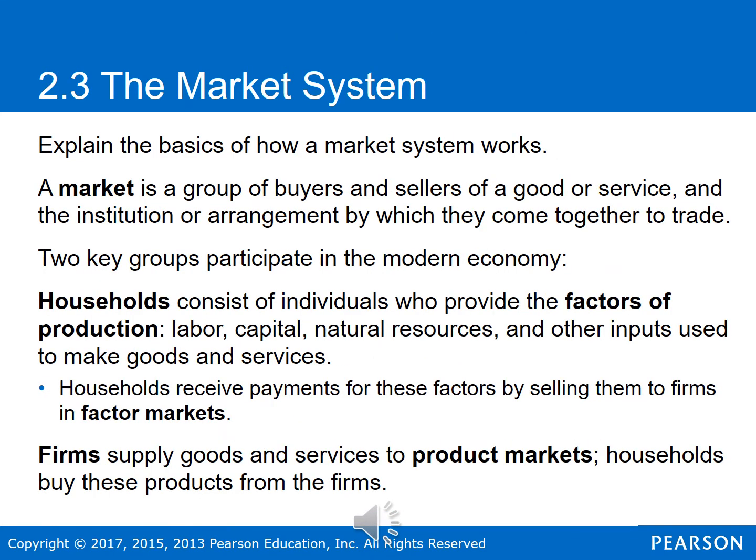Now let's turn to the market system. A market is a group of buyers and sellers of a good or service and the institutional arrangement by which they come together to trade. There are two key groups that participate in the modern economy: the consumer side — households and individuals — who provide the factors of production: labor, capital, natural resources, and other inputs. Households receive payments for these factors by selling them to firms. When you work for an employer, you sell them your labor.